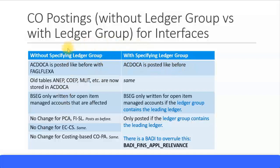Without specifying a ledger group, ACDOCA is posted just like before in the FAGLFLEXT with New GL. Going forward, it posts to the ACDOCA table. The same applies with specifying a ledger group — items are still posted to the ACDOCA table. There is no change either way; all items are posted to the ACDOCA table.